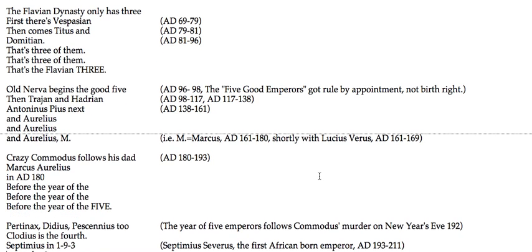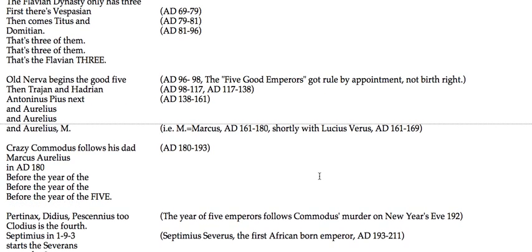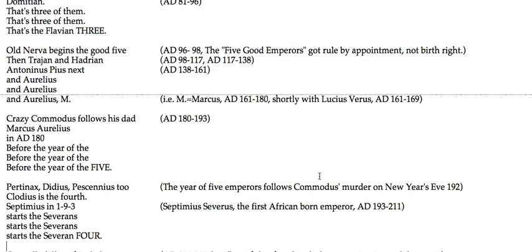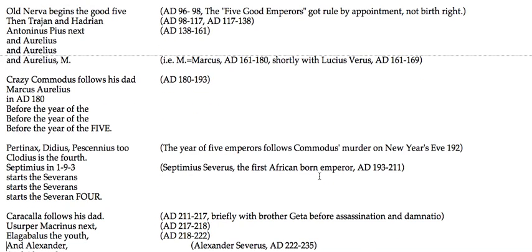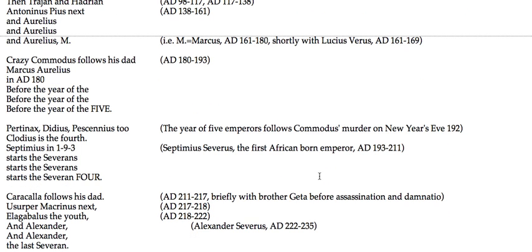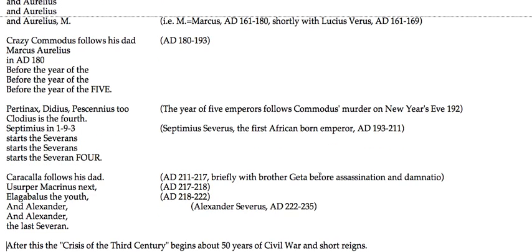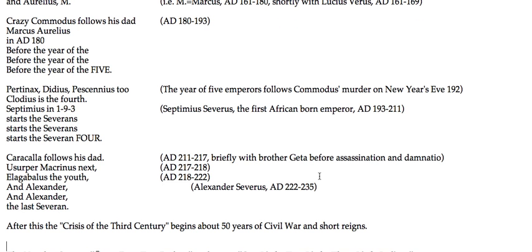Before the year of the five, for 193 AD: Didius, Pescennius, Clodius is the fourth. Septimius, in 193, starts the Severans — starts the Severin four.